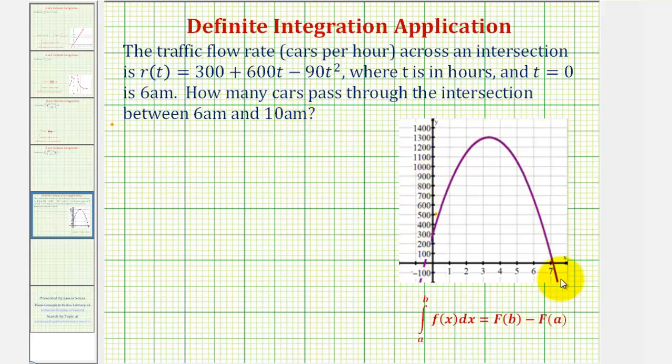Looking at the graph of r of t here on the right, for each specific value of t, we can determine exactly how many cars are passing through the intersection at that instant in time. But our goal is to determine how many total cars have passed through the intersection from 6 a.m. to 10 a.m.